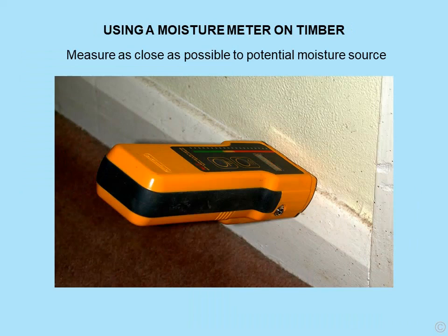How do we use a moisture meter on timber? Basically, we have to measure as close as possible to the potential source of moisture. Take a skirting, for example — we're using the very top of the skirting because it's very close to the potential source of moisture. The feature to remember is that water does not pass very readily across the grain, hence you need to go very close to that potential source.